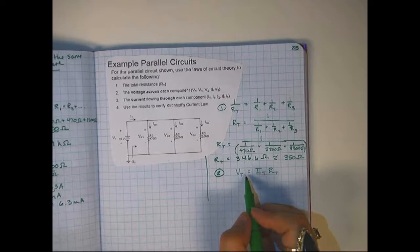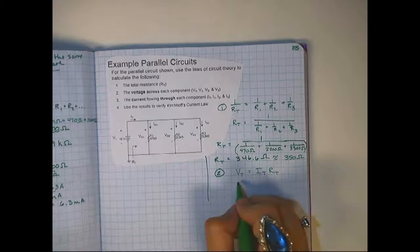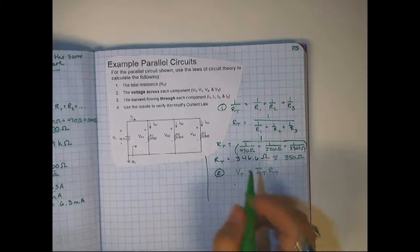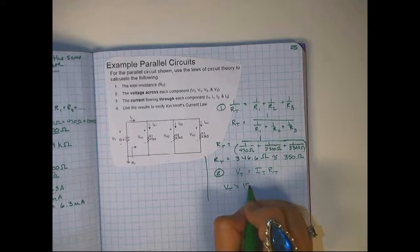So I know my total voltage is 15 volts right here. Oh, and I don't even need to calculate it because I don't know my current yet. So I'm just going to use my VT is right here, total voltage.